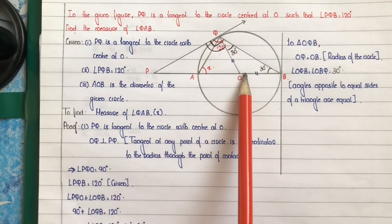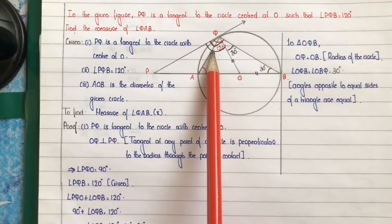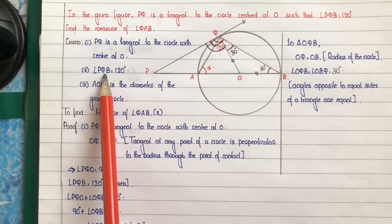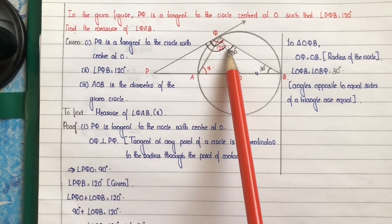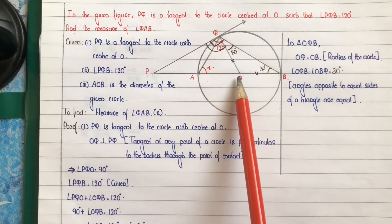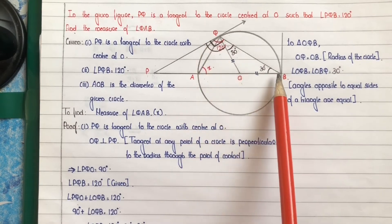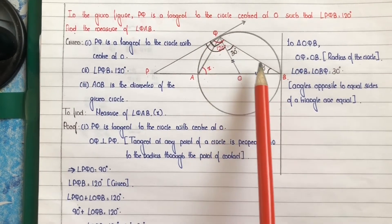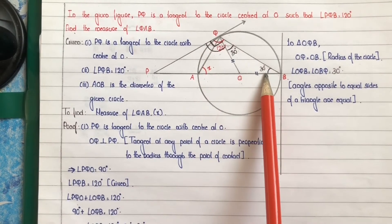Since OQ equals OB, we can say that angle OQB equals angle OBQ equals 30 degrees. Reason: angles opposite to equal sides of a triangle are equal. So angle OBQ is equal to 30 degrees.